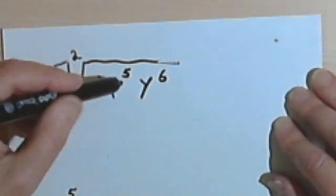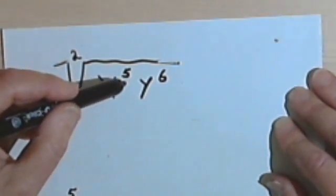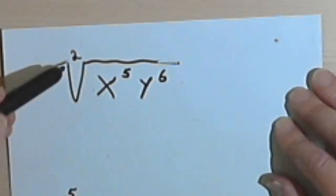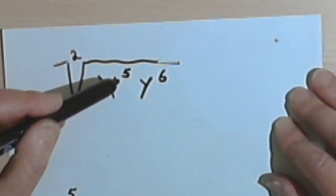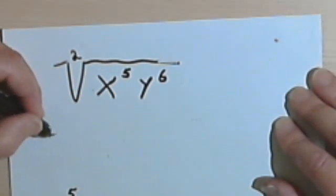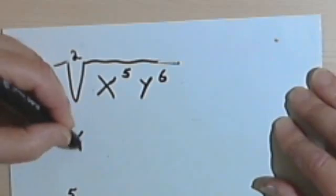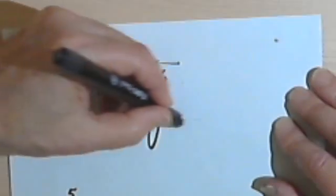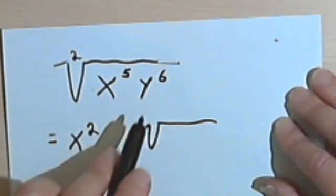We're going to take this 2, divide it into the first exponent we see. We're going to deal with x to the 5th and y to the 6th separately. So we divide 2 into 5 and it goes twice. So I'm going to have x squared and I'm going to need a radical sign. I'm going to leave some room in here because I want to deal with the y.